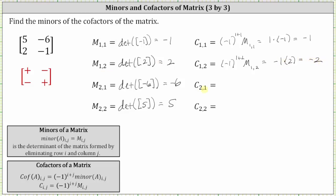Cofactor two comma one is equal to negative one raised to the power of two plus one times minor two comma one. Again, we have the cube of negative one, which is negative one, and we know minor two comma one is negative six. Negative one times negative six is positive six. And finally, cofactor two comma two is equal to negative one raised to the power of two plus two times minor two comma two, which is equal to the fourth power of negative one, which is positive one times minor two comma two is five. One times five is five.